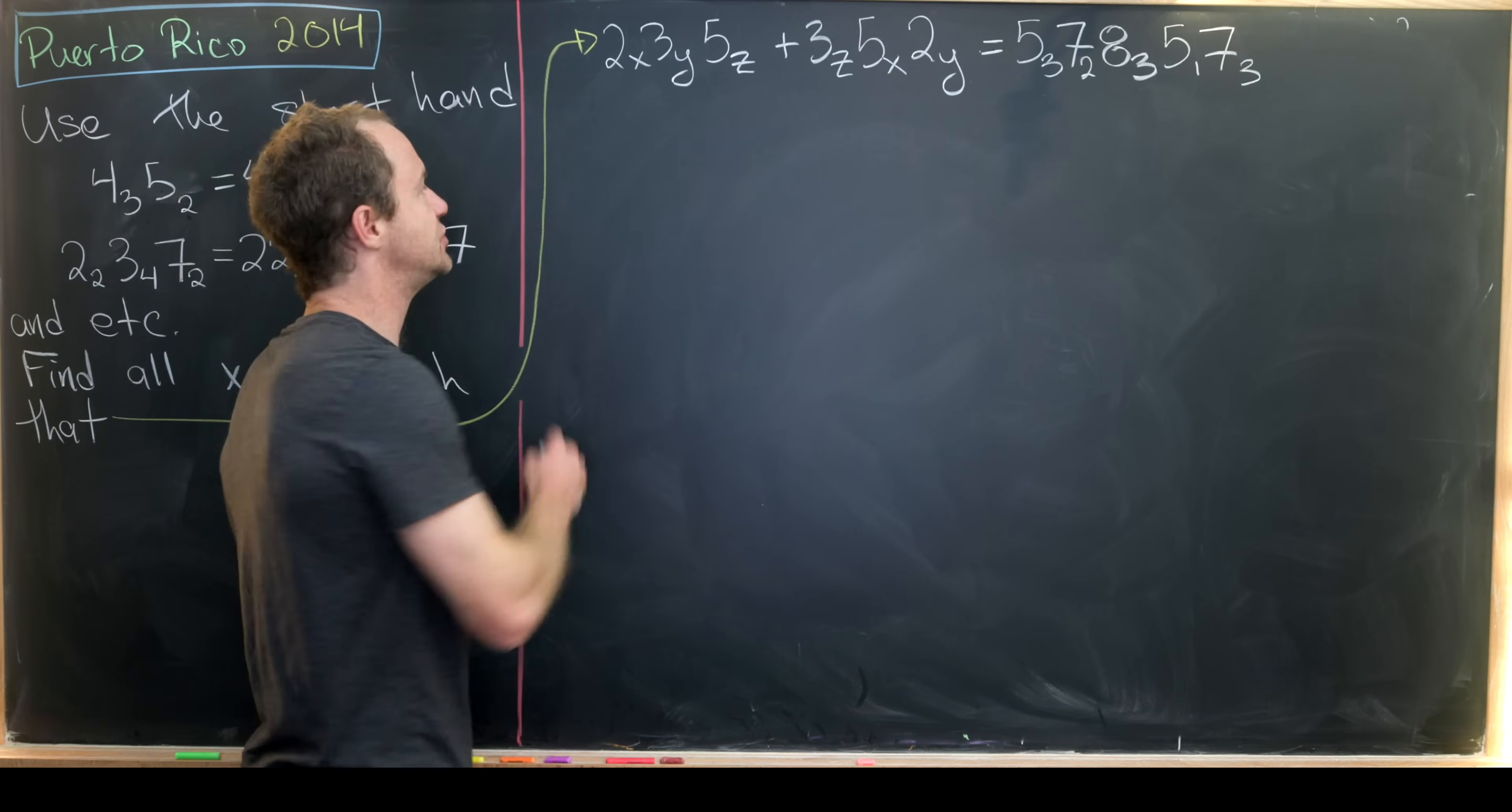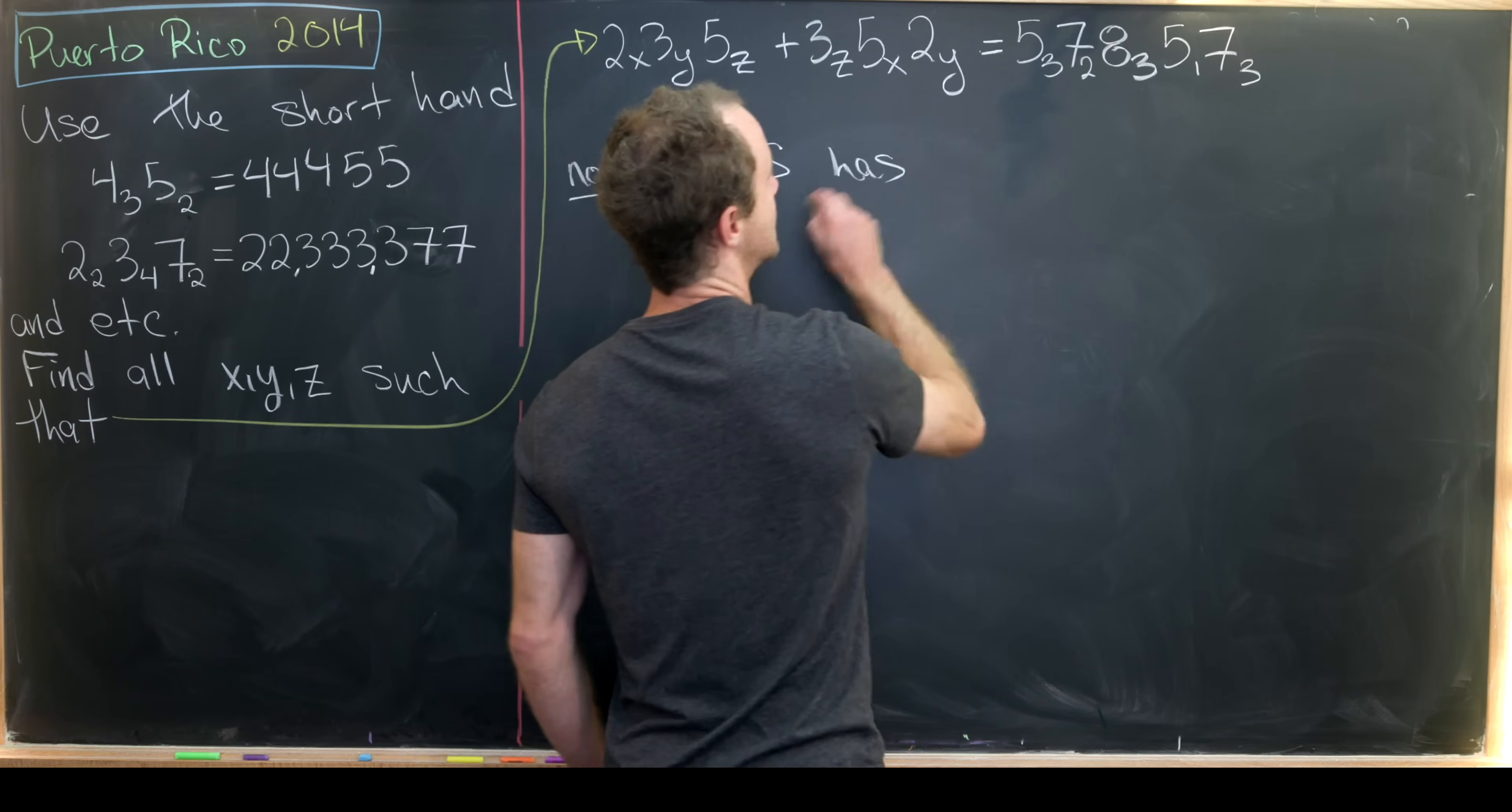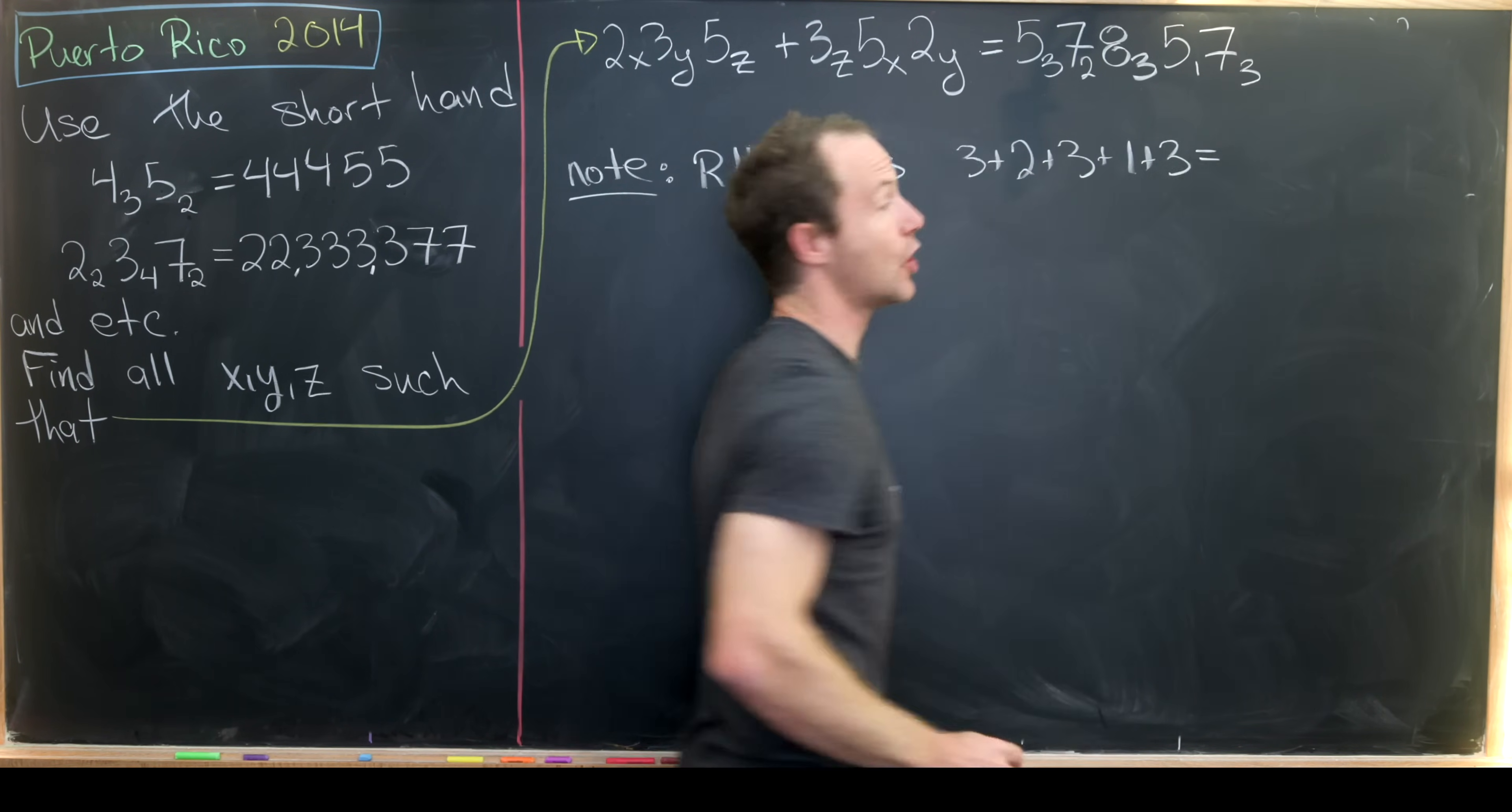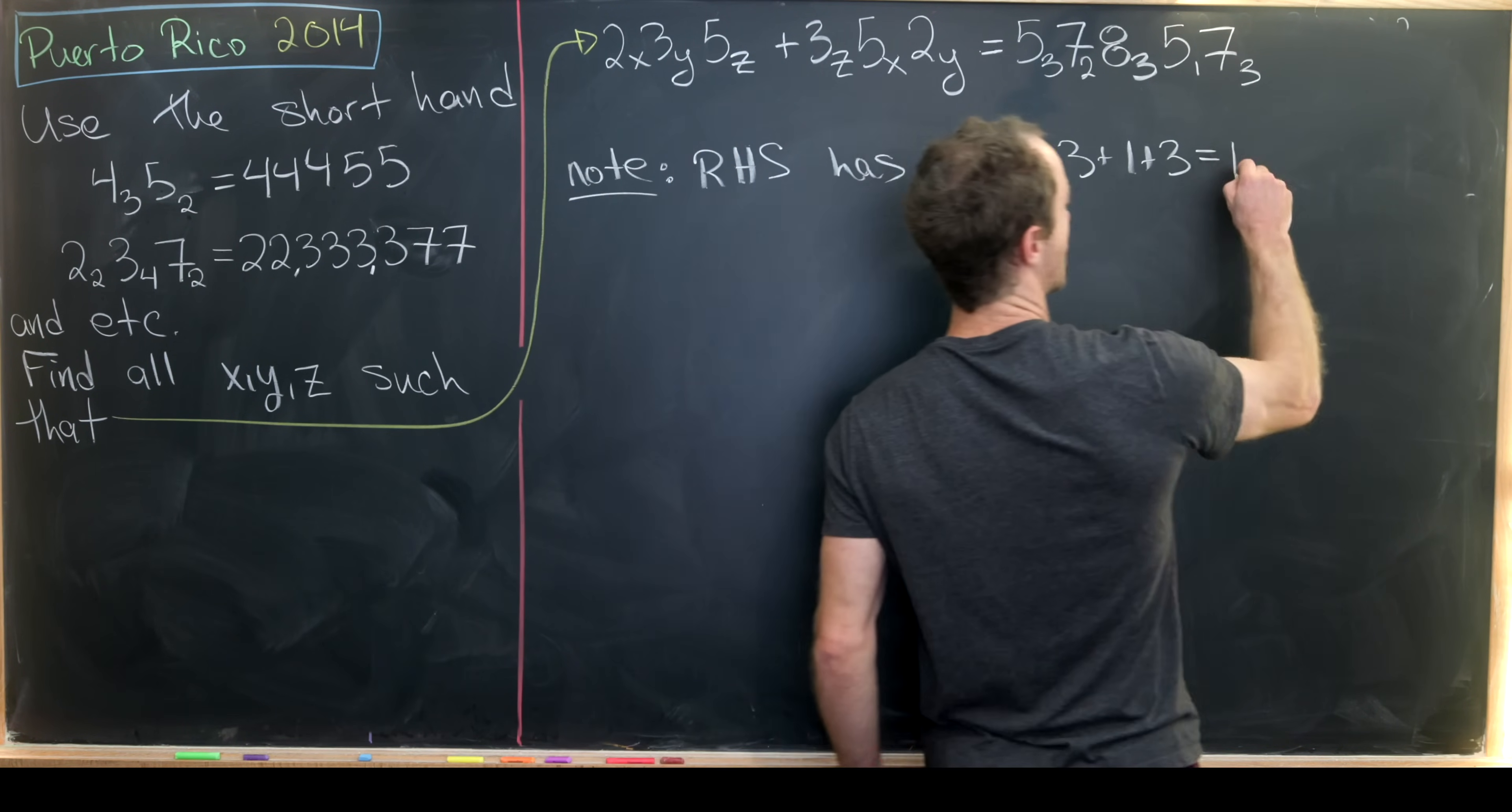Let's note first of all how many digits are in the right-hand side. The right-hand side has three plus two plus three plus one plus three total digits. So that's going to be three plus one which is four, plus another three which is seven, and then plus that five makes 12.